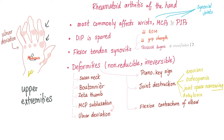Also: piano key sign — which sounds romantic but is not. Joint destruction leading to erosion, osteopenia, joint space narrowing, and the horrible ankylosis, which is fusion. Flexion contracture of the elbow. There is a difference between contraction and contracture — contraction describes muscle and is most often normal, contracture describes joint and is almost always pathology.